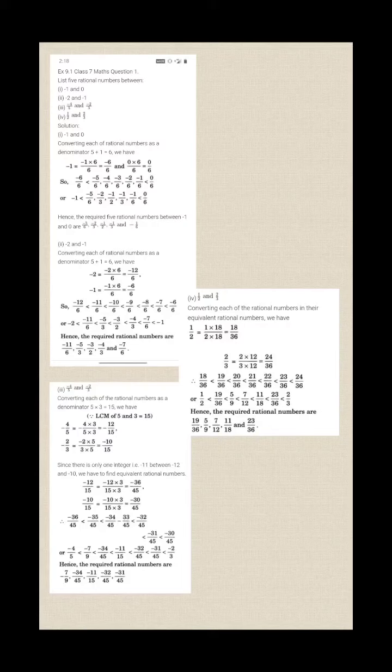So, we reach 0 by 6. So, the 5 rational numbers which lie between minus 1 and 0 are minus 5 by 6, minus 2 by 3.